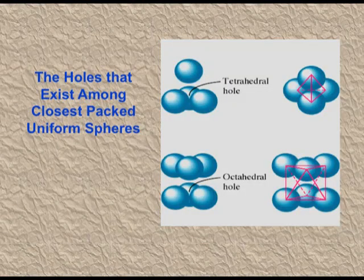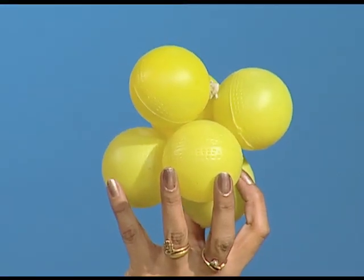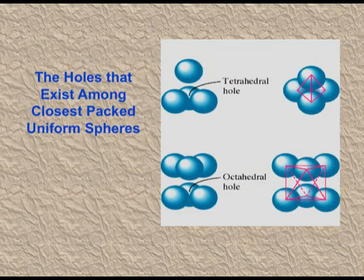The octahedral void is the vacant space between six touching spheres. The empty space enclosed between six touching spheres is called an octahedral void. The octahedral void is larger than the tetrahedral void.